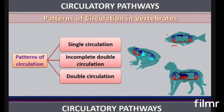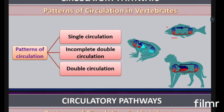According to the number of chambers and how many times blood enters the heart, circulation is classified as single or double. In lower vertebrates such as fishes with a two-chambered heart, there is single circulation — blood enters the heart only once per cycle: from the atrium to the ventricle, then pumped to the gills.